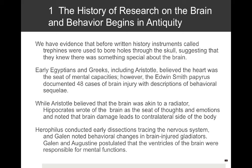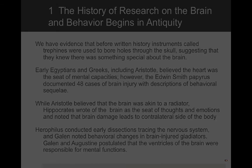While Aristotle believed the brain was akin to a radiator that cools the body, Hippocrates wrote of the brain as the seat of thoughts and emotions, noting that brain damage leads to contralateral behavioral consequences. Hippocrates conducted early dissections tracing the nervous system. Galen noted behavioral changes in brain-injured gladiators, and Galen and Augustine postulated that the ventricles of the brain were responsible for mental function — they thought those cavities contained gases responsible for mental processes.